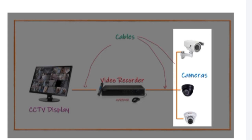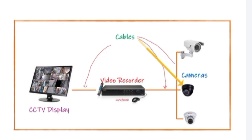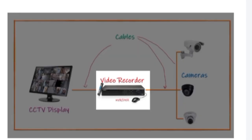Then this is the cable — transmission cables that transmit the data from cameras to the video recorders. Then we have video recorders, which are used to process the data received from cameras.